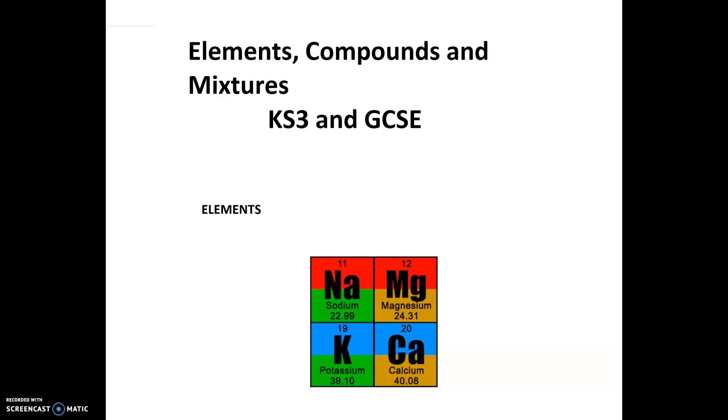Different chemicals are made of different elements. Let's look at what an element is. An element is a pure substance which cannot be simplified and is made out of one type of atom only.